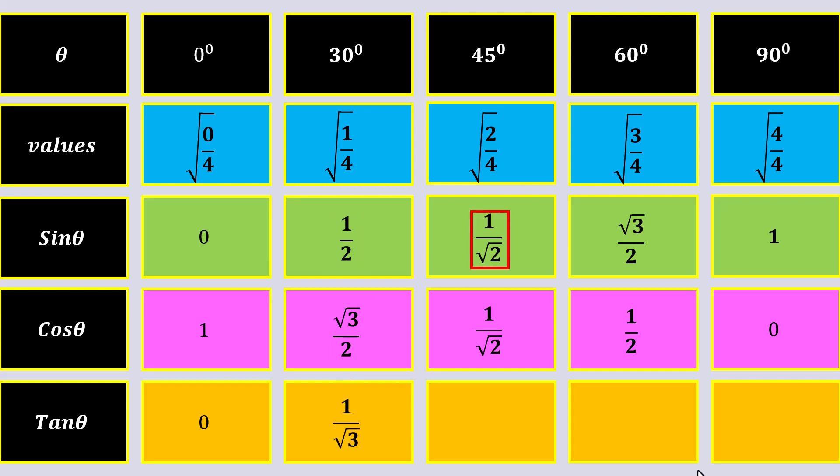1 over under root 2 divided by 1 over under root 2 is 1. Under root 3 over 2 divided by 1 over 2 is under root 3.